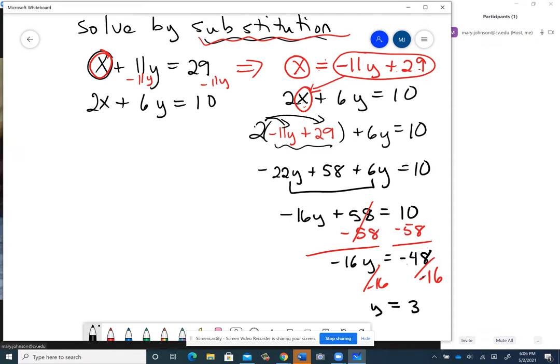And then once you know the y coordinate, you can go back to this equation. But I like to use this guy right here. So I'm going to go to him. x equals negative 11y plus 29. And right where the y is, right there, I know y is 3. So I'm going to substitute a 3 in.